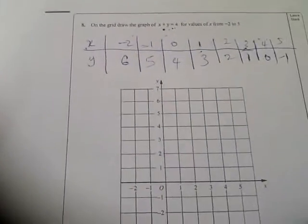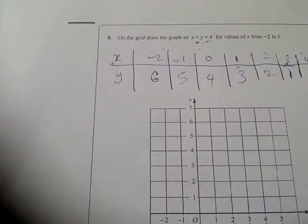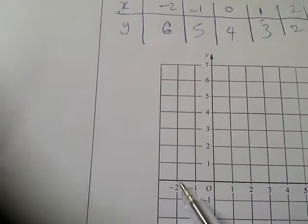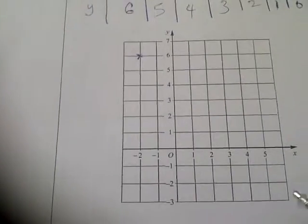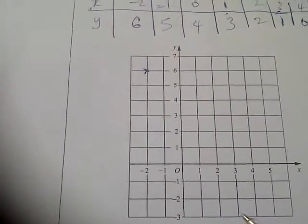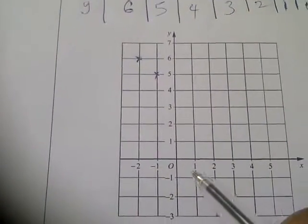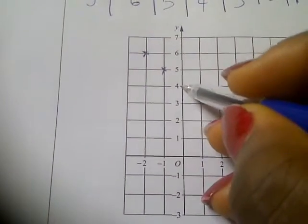So we've gotten the table of values, so we can just plot the graph. When x is minus 2, y will be 6 — make a point here. Then when x is minus 1, y will be 5 — make another point here. When x is 0, y will be 4 — make another point here.